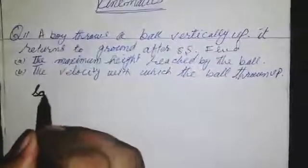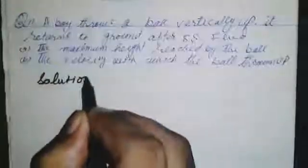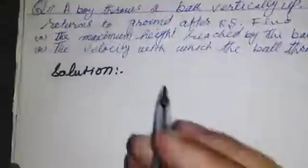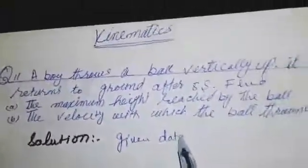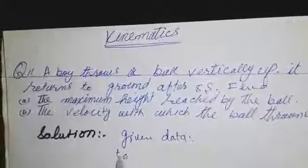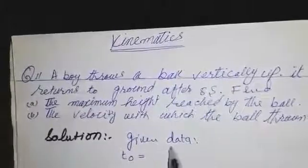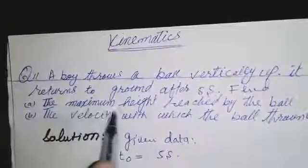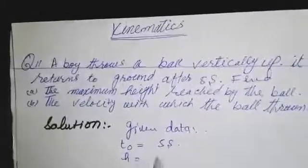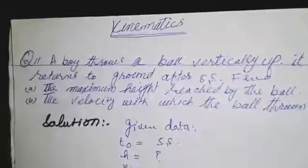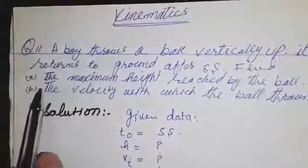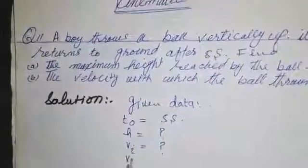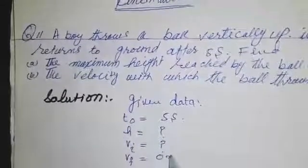Let's solve it. Given data is here: time t₀, the total time of the motion, is 5 seconds. We have to find the maximum height h and its initial velocity vᵢ. When it rises to a certain height, its velocity becomes 0, so vf is equal to 0 meter per second.